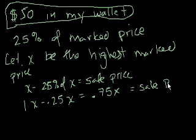All I did is I rewrote x minus 25% of x as 1x minus 0.25x. And that's the same thing as 0.75x, because 1 minus 0.25 is 0.75. So 0.75x is going to be the sale price.